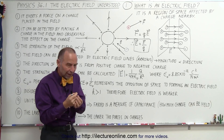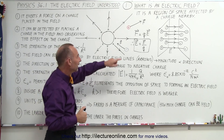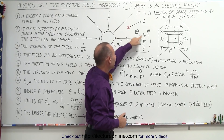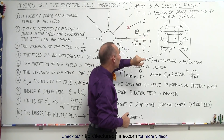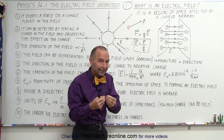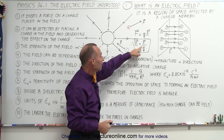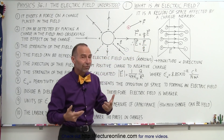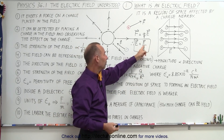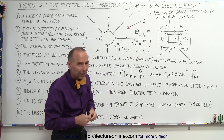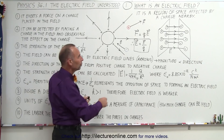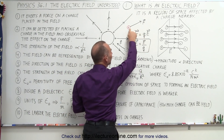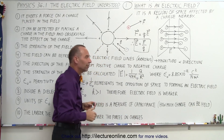We can actually figure out the magnitude of that force. It is simply proportional to the size of the charge you place in the field and the magnitude of the field. In other words, you can calculate the electric field strength by measuring the force on a small charge you place in the field. Simply take the force, divide by the charge, and you have the magnitude of the electric field. Also notice that the electric field is in the same direction as the force if a positive charge is placed in the field.